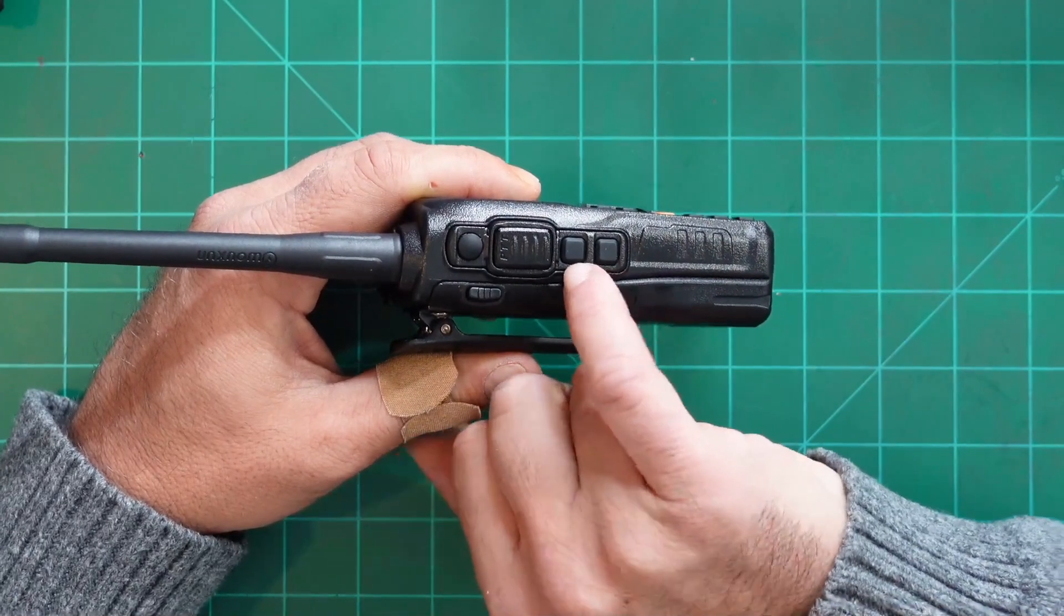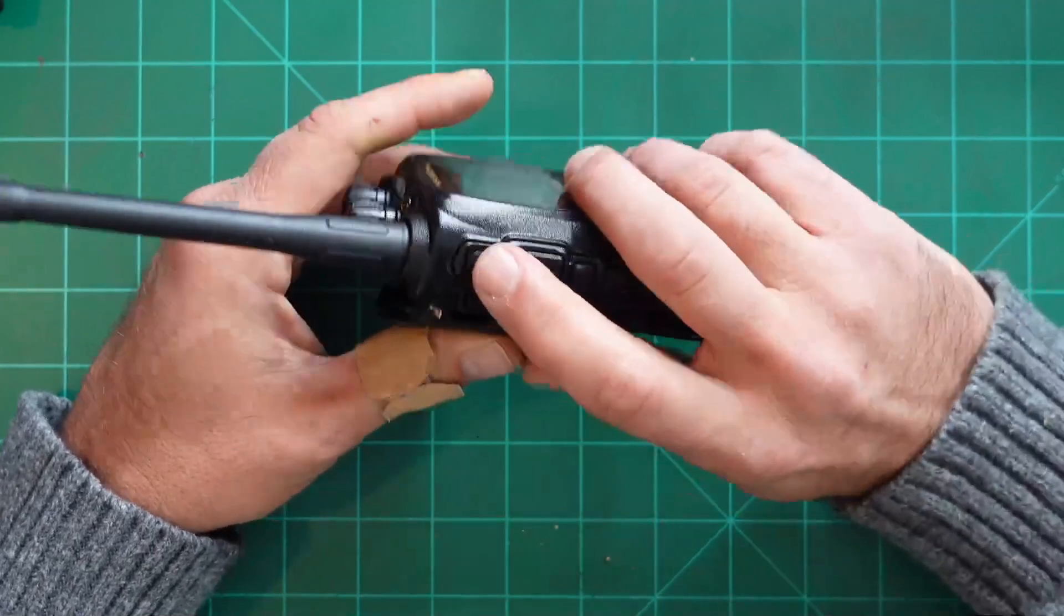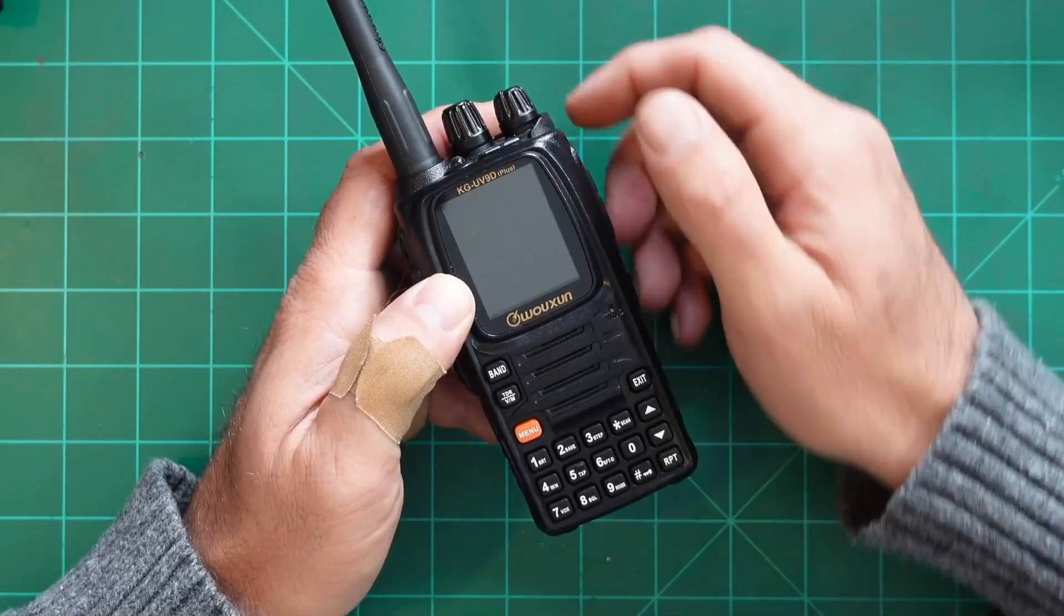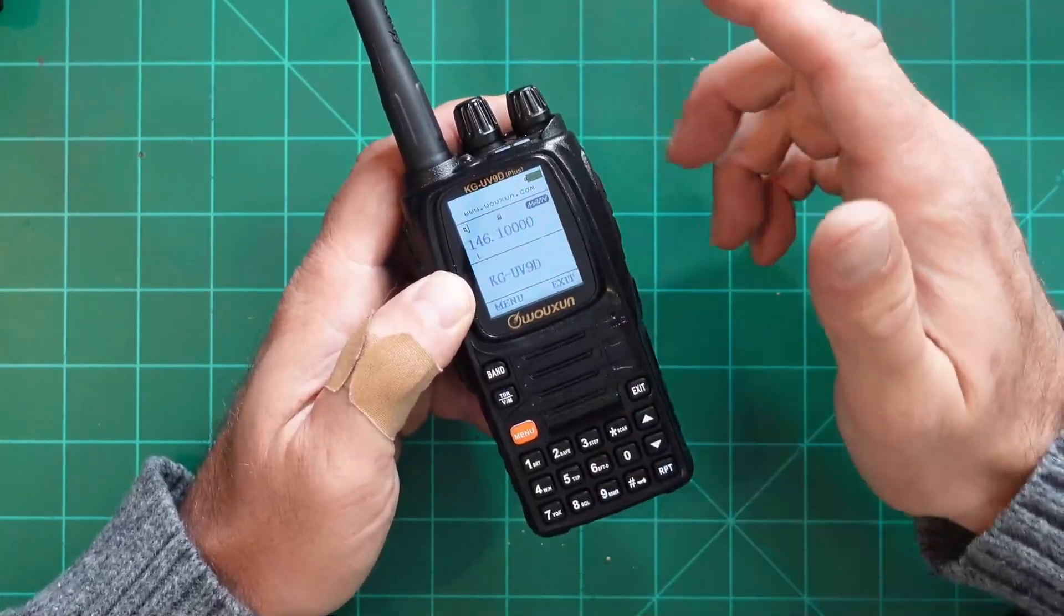You have a button that'll break the squelch. You have a button that'll turn on the flashlight, depending on how long you hold these. And I'll show all that in a later episode as well. And then you have a button that could activate the emergency tone, which is pretty annoying. When you turn on the radio, you do see this color LCD display.